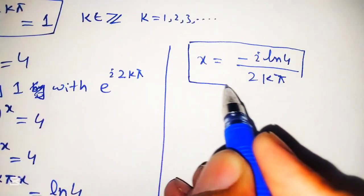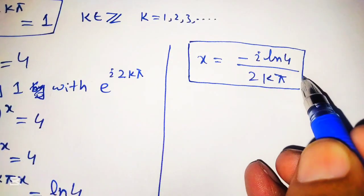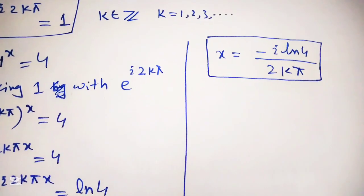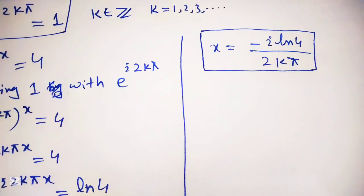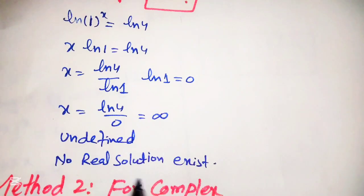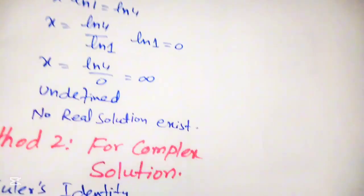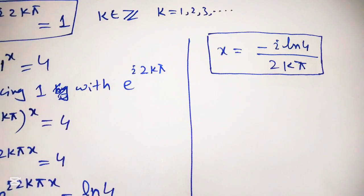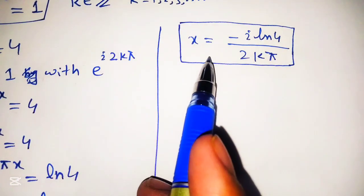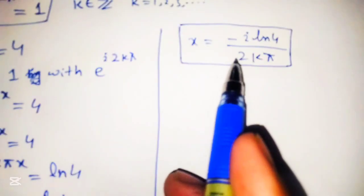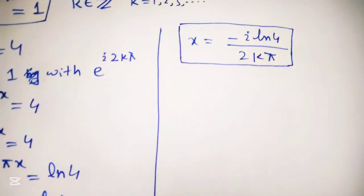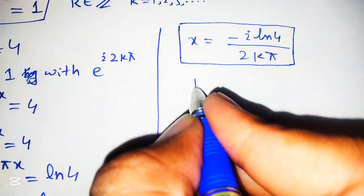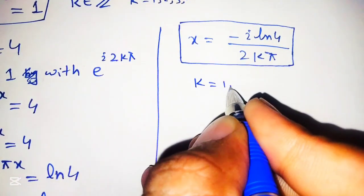We can see that it is a complex solution. By using this method, we find the complex solution of the given equation, and as proved at the start, the real solution does not exist. By using Euler's identity and some basic mathematics, we proved that the complex solution is x equals minus iota natural log of 4 over 2k pi. This solution exists only for k equal to 1, 2, 3, and so on.